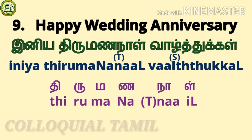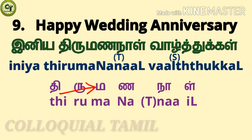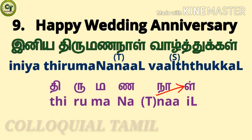For 'happy wedding anniversary,' say iniya thirumananal vaal thukkal. You already know iniya and vaal thukkal. For thirumananal: 't' is a short sound letter, 'ru' is a short sound letter, 'ma' is a short sound letter, 'na' is a short sound letter — big na, with your tongue touching the middle roof of your mouth — then 'na' is a long sound letter, and 'il' is the big il. Together: iniya thirumananal vaal thukkal.